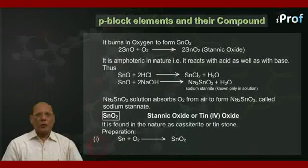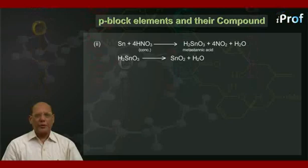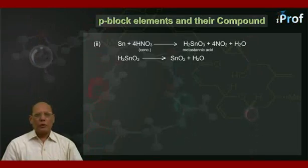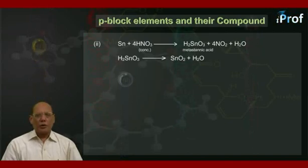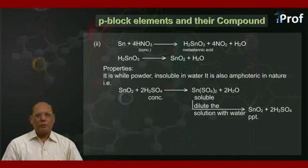Preparation method one: Sn plus O₂ gives SnO₂. Second method: Sn plus 4HNO₃ concentrated gives H₂SnO₃ plus 4NO₂ plus 2H₂O. This compound H₂SnO₃ is known as meta-stannic acid. On further heating, meta-stannic acid gives SnO₂ plus H₂O.